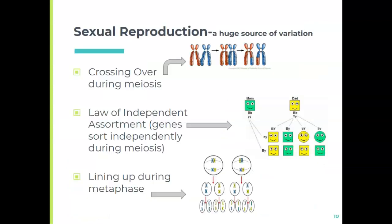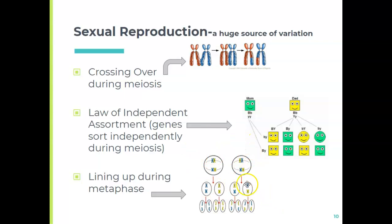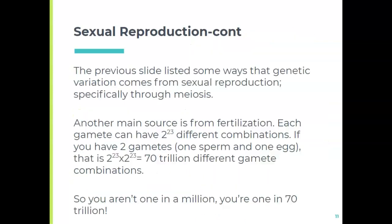We've talked about how crossing over during meiosis leads to new gametes, how gametes independently assort, how big B and little B don't necessarily travel together, and how different orientations at metaphase can lead to different gametes. All of these are a big source of genetic variation.